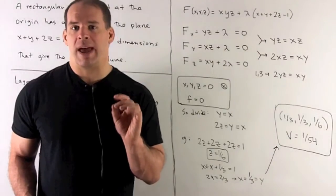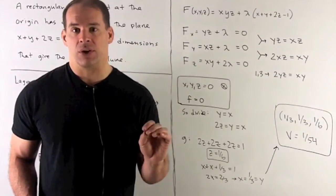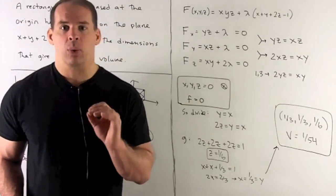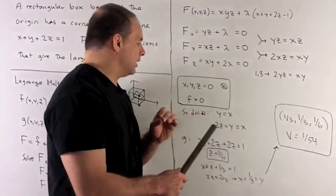So we might as well assume x, y, and z are non-zero. Now you can divide. Once you do that, you'll wind up with y equals x equals 2z.